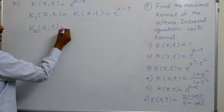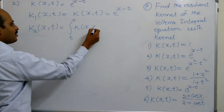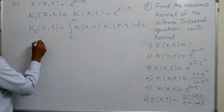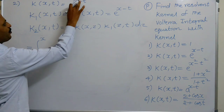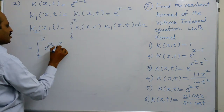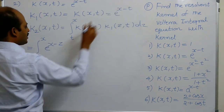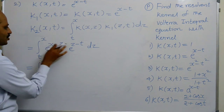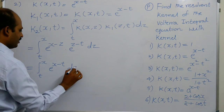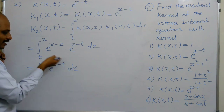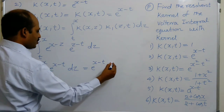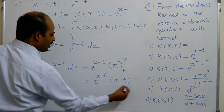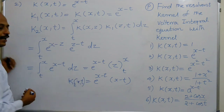K2 of X, T is found using the iterated kernel formula: integral from T to X of K(X, Z) times K1(Z, T) dZ equals integral T to X of e^(X minus Z) times e^(Z minus T) dZ. The minus Z and plus Z cancel, giving integral T to X of e^(X minus T) dZ. Since e^(X minus T) is constant in Z, this equals e^(X minus T) times (X minus T). This is K2 of X, T.